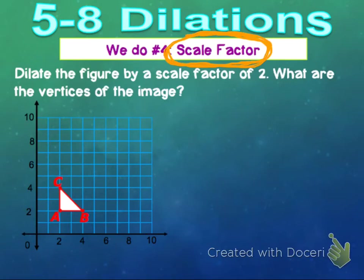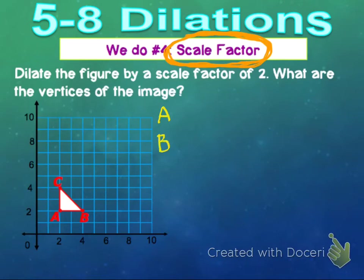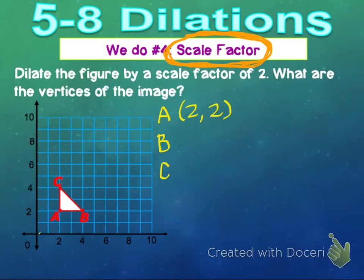This one says: dilate the figure by a scale factor of two. So what are the vertices of the new image? We need to pull the actual values of the original first. Vertex A is located at (2, 2), vertex B is located at (4, 2), and vertex C is located at (2, 4).